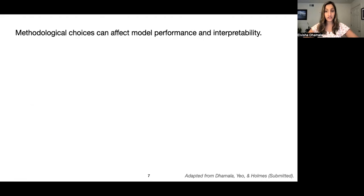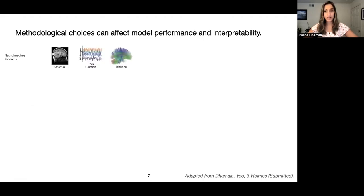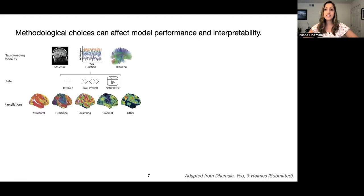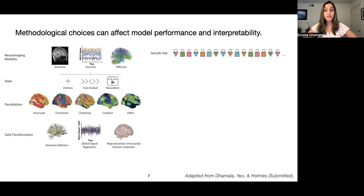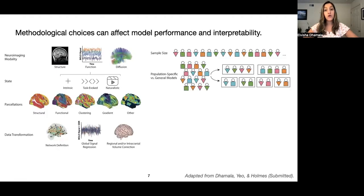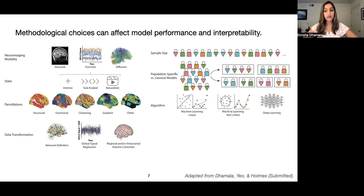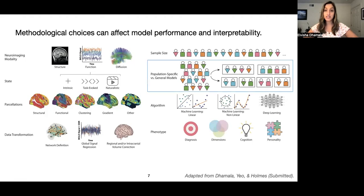Some of these considerations include the neuroimaging modality and the state that we choose to base our predictions on, the parcellations we use, how we transform our data, how many subjects we include, whether we include population-specific or general models, the algorithms that we use, and finally the phenotypes that we're seeking to predict. While there's a lot that can be said about each of these choices, today I'm going to focus on population-specific modeling.